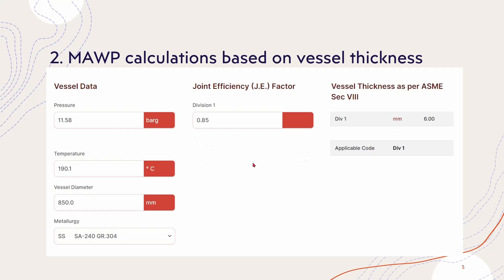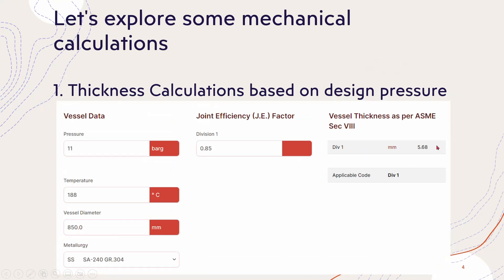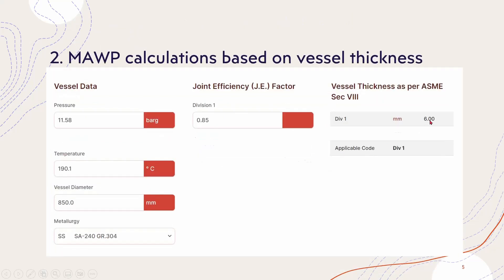Now if we calculate the MAWP from the vessel thickness — if you go to the market, no one will supply a 5.68 mm plate to manufacture a vessel. So we need to select a standard plate size such as 3, 4, 5, 6, or 8 mm. The calculated thickness is 5.68 mm, so we select the next standard size: 6 mm. With a 6 mm plate, the vessel can bear up to 11.58 bar gauge pressure, which is the MAWP — greater than the design pressure.